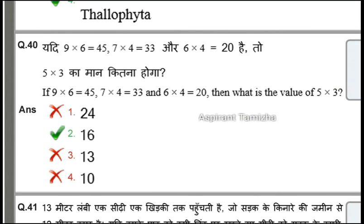The next question: 9 into 6 is 45, 7 into 4 is 33, 6 into 4 is 20. Then what is the value of 5 into 3?